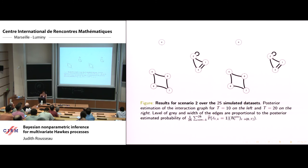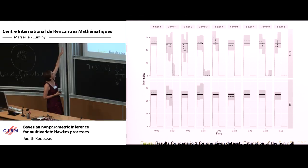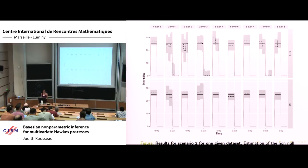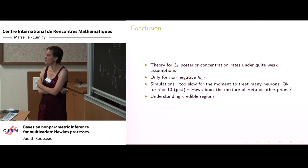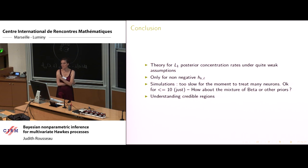To conclude: we now have the theory for L1 concentration for Hawkes processes almost complete — almost complete in the sense that we only deal with positive H functions. We don't yet have a story for the case where H can be negative. When H functions are positive, Hawkes processes have a nice representation as cluster processes like Galton-Watson trees, which is very useful for modeling short dependence in time and for approximating sums as if independent.